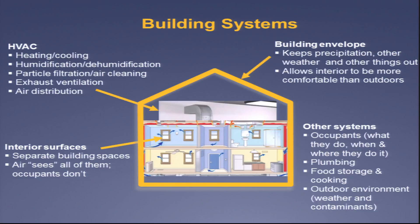There are other systems in the building that we're not going to focus a lot on today: the occupants — what do they do, when and where do they do it; plumbing systems that bring water into the building and remove liquids and other wastes; food storage and cooking; and then the outdoor environment — the weather and the contaminants outside. We're going to hear first about HVAC systems from Dennis, building envelope from Terry Brennan, and then Jeff Siegel on interior surfaces.